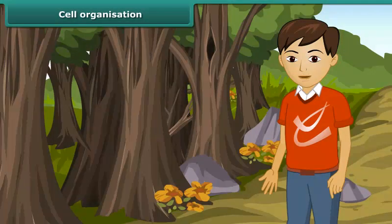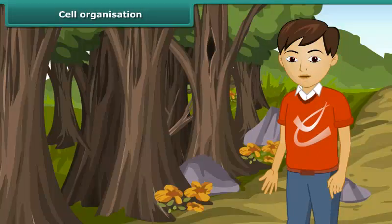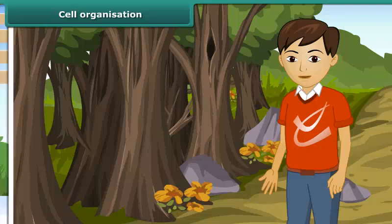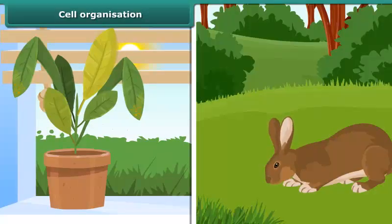Now we will study important characteristics of living organisms that differentiate it from living things. All living organisms, plants or animals, are comprised of cells.